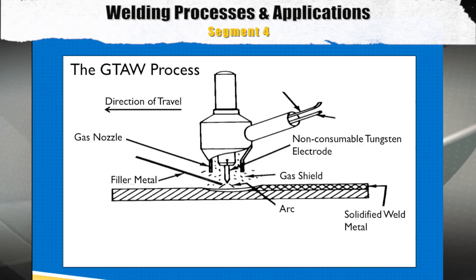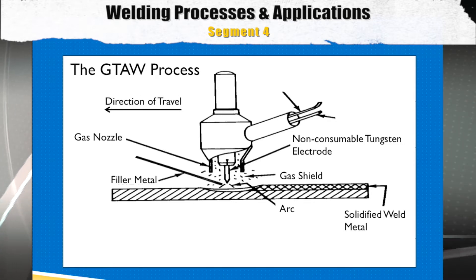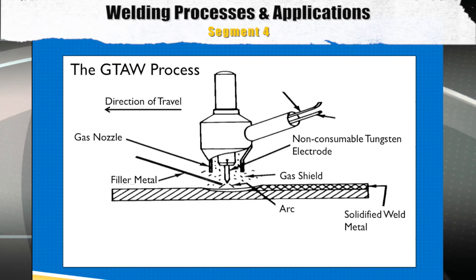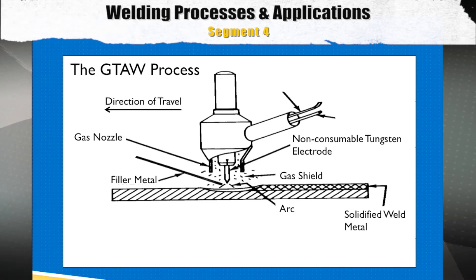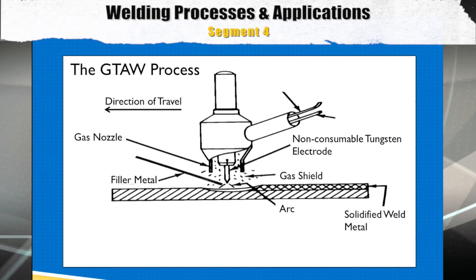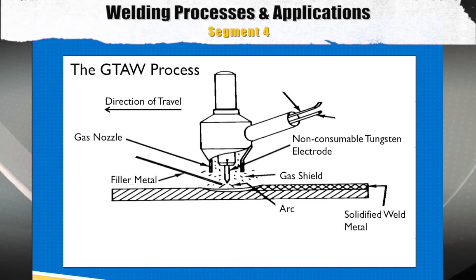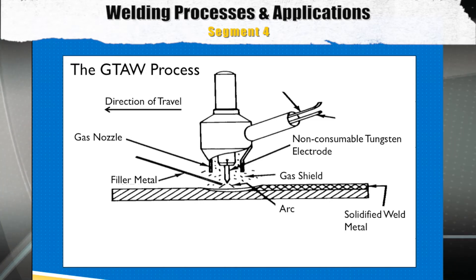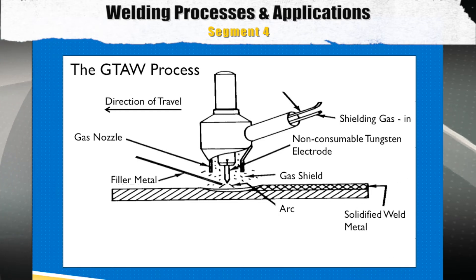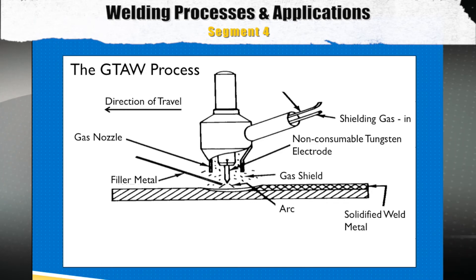Our next item is the non-consumable electrode. Unlike the other processes, the GTAW process uses a non-consumable electrode, meaning the filler metal will be manually fed into the molten weld pool. The issues a welder needs to be aware of are: what type of tungsten is best, what size of electrode should be used, what type of end prep is needed, and what amperage is correct for a given electrode type and diameter. These are critical questions a welder needs to answer to be a productive GTAW welder. The final item is the gas inlet — just indicating the tube carrying the shielding gas from the compressed gas cylinder to the welding torch.